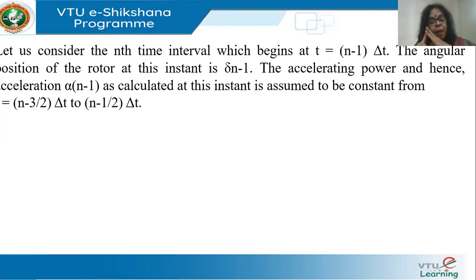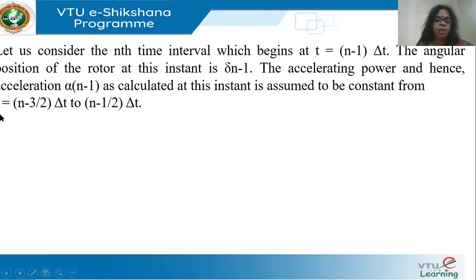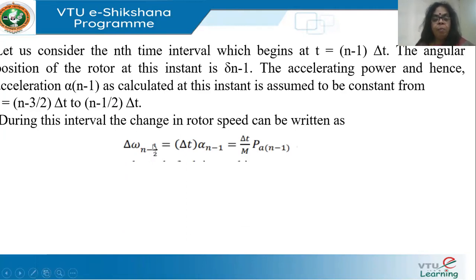The accelerating power and hence the acceleration is assumed constant from the middle of one interval to the middle of the next. Since we are at interval n−1, the preceding interval middle is n−3/2 and the next is n−1/2. During this interval, since acceleration is constant, the rotor speed will change. The change in velocity Δωₙ₋₁/₂ is Δt × αₙ₋₁ = (Δt / M) × PAₙ₋₁, from the swing equation where d_ω/dt = PA/M.